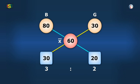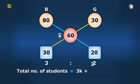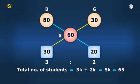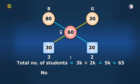And here, the total number of students is 5k, which is equal to 65, as per given in the question. Now, we can easily find the number of girls. This will be 2 by 5 into total, i.e. 2 by 5 into 65, which is equal to 26.